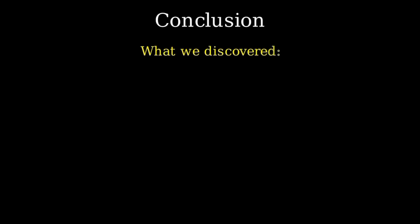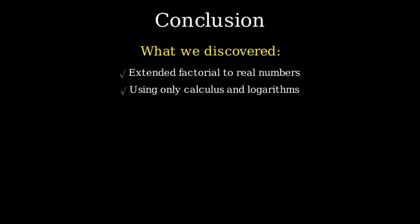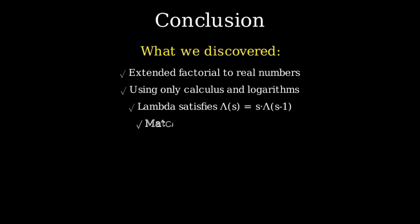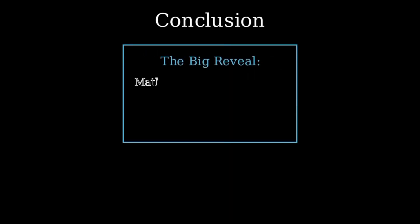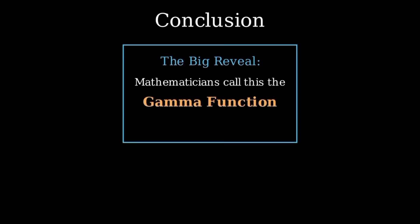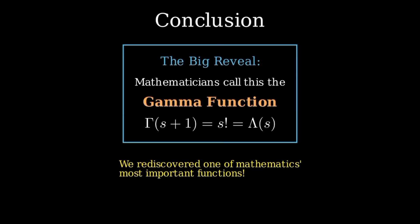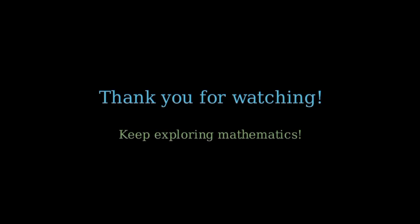Let me summarize what we've discovered today. First, we extended the factorial function from just integers to all real numbers. Second, we did this using only basic calculus and logarithms — no complex analysis, no advanced functions, just pure mathematics flowing from simple principles. Third, our lambda function satisfies the recurrence λ(s) = s · λ(s-1), the defining property of factorial. Fourth, for all integers, our lambda function gives exactly the factorial. What we discovered — this natural extension — mathematicians call the gamma function. The relationship is Γ(s+1) = s! = λ(s). We didn't invent this; we rediscovered it. By following the natural path of mathematics and letting calculus guide us, we arrived at one of the most important special functions in all of mathematics.